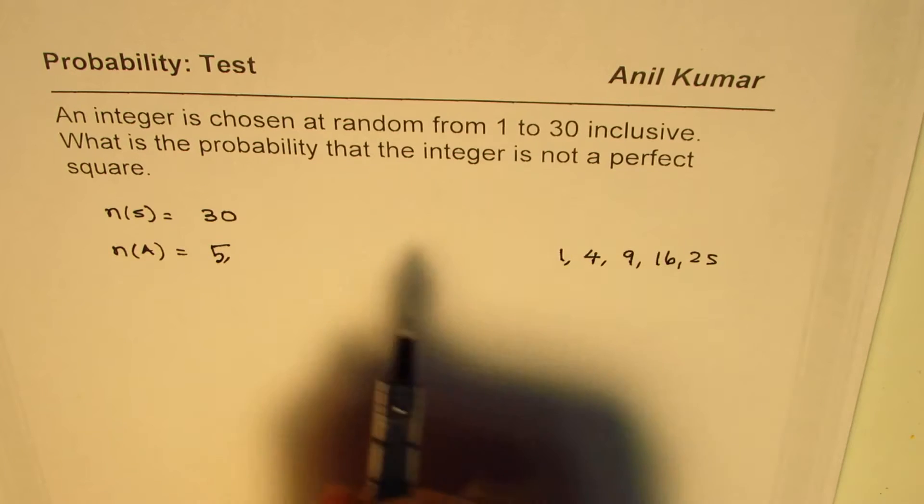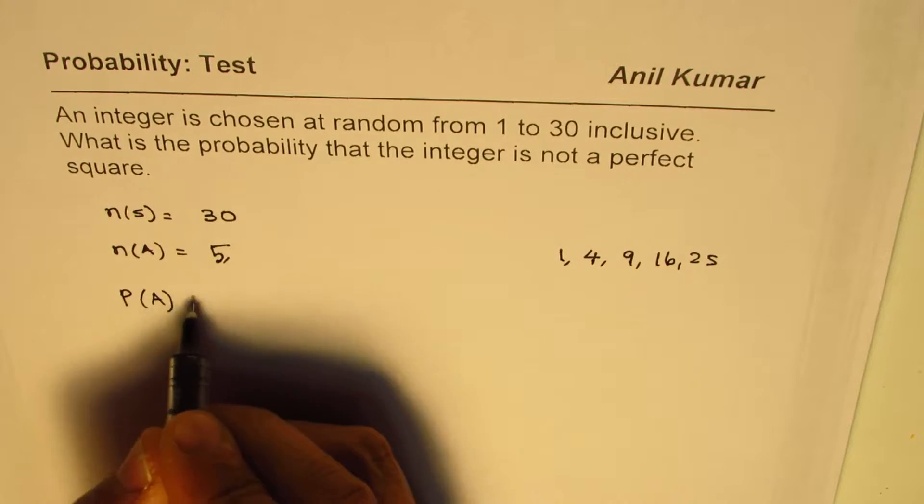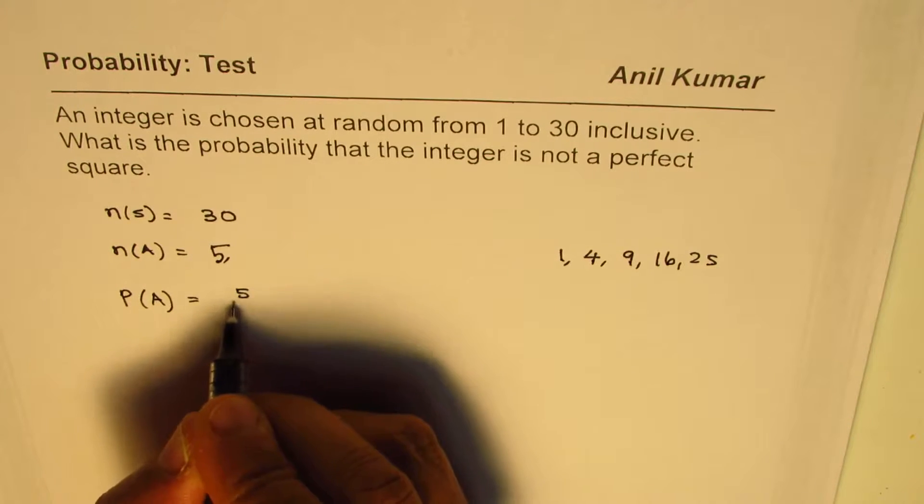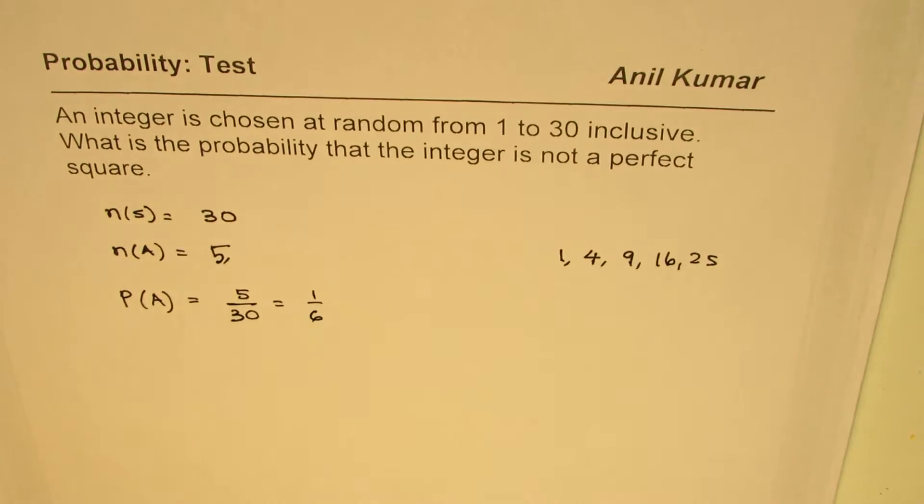Therefore, the probability of event A is 5 out of 30, which could be simplified as 1 over 6.